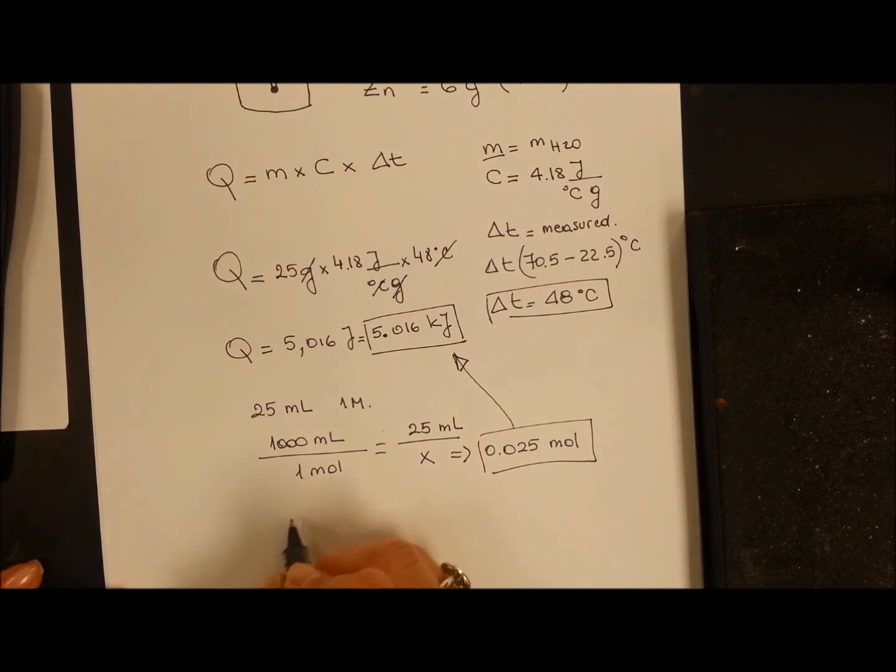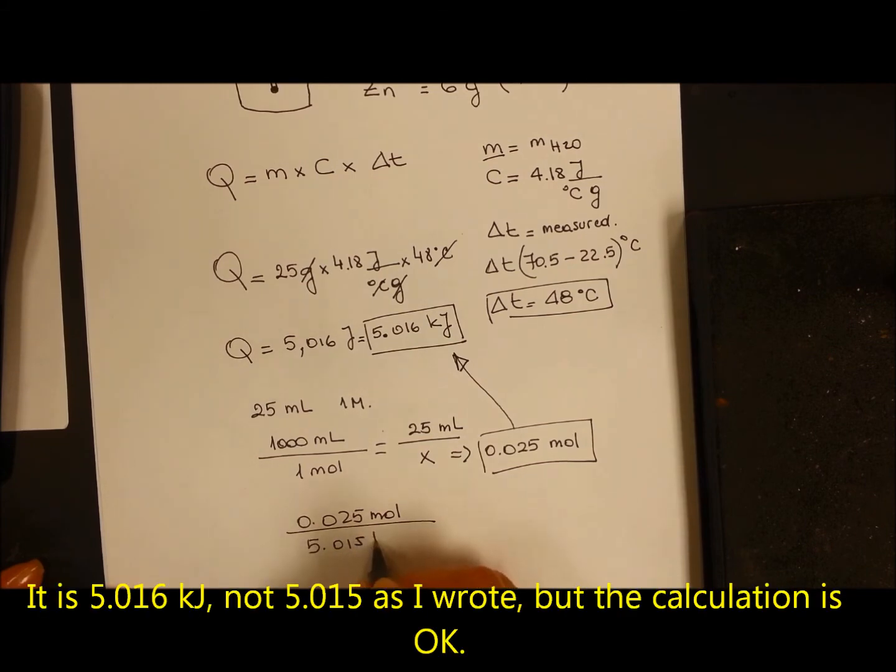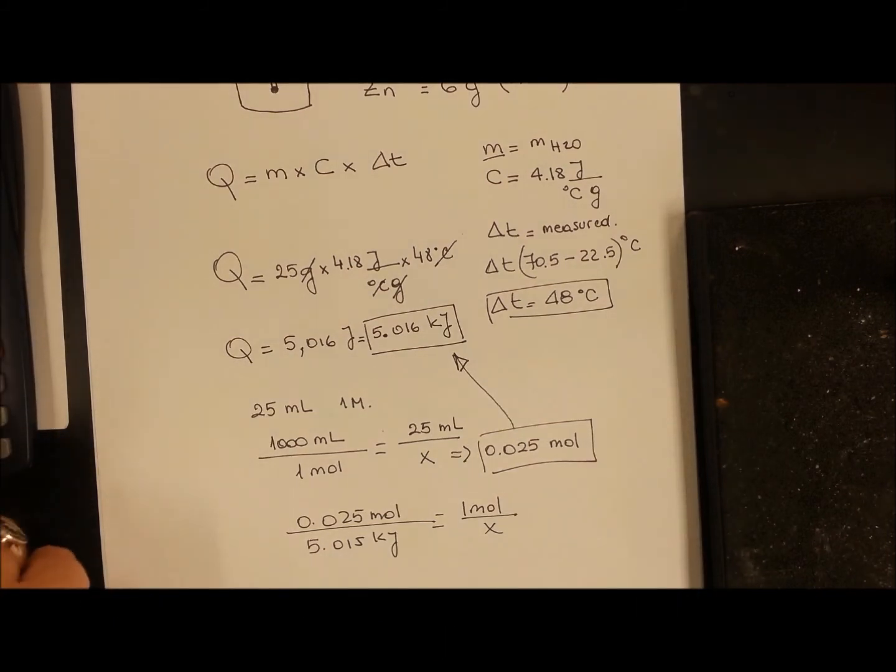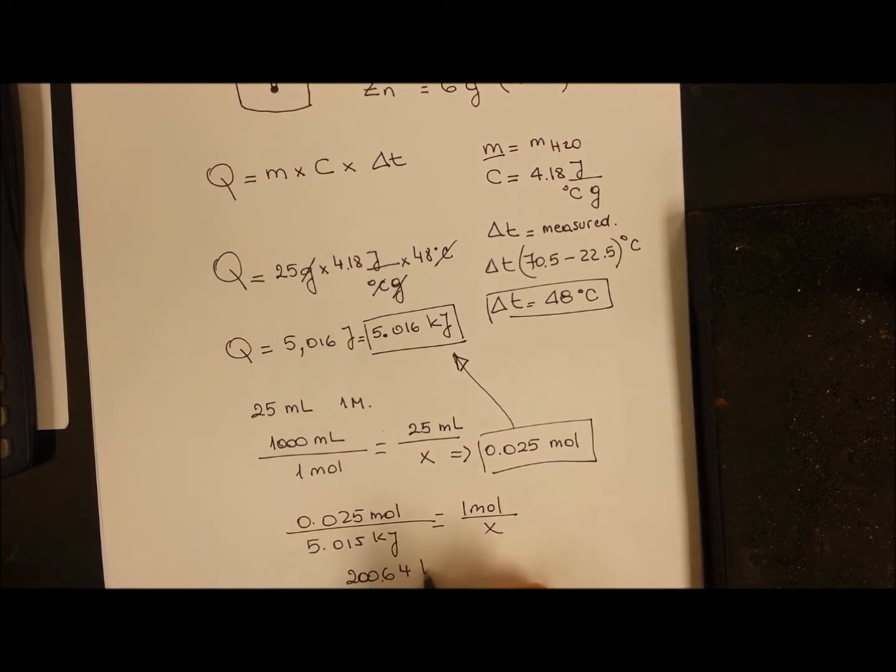So we said for 0.025 moles, I have 5.016 kilojoules. For one mole, it's going to be X. Or we just divide the kilojoules by the amount of moles. So it's 5.016 divided by 0.025. This gives me 200.64 kilojoules.